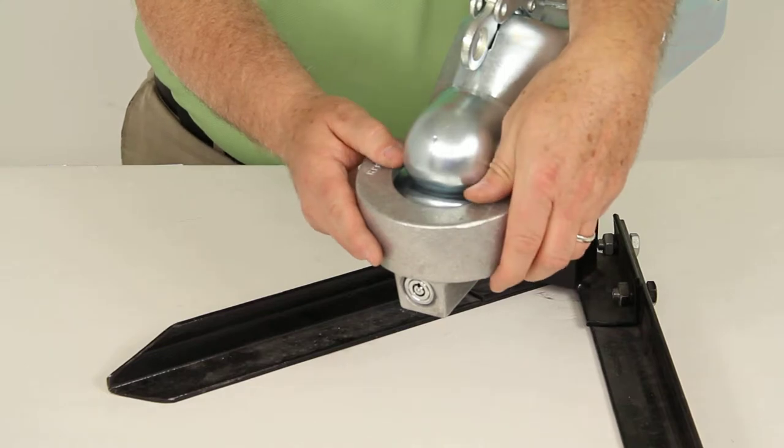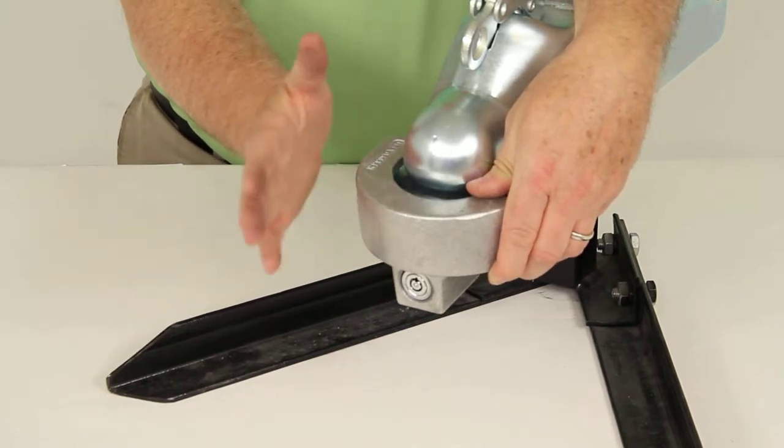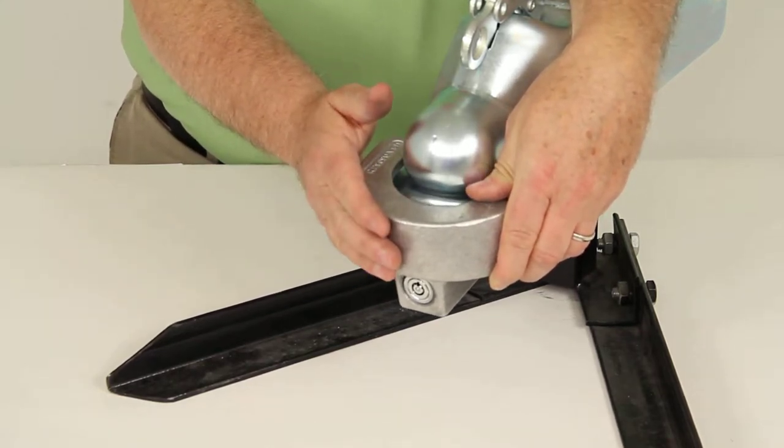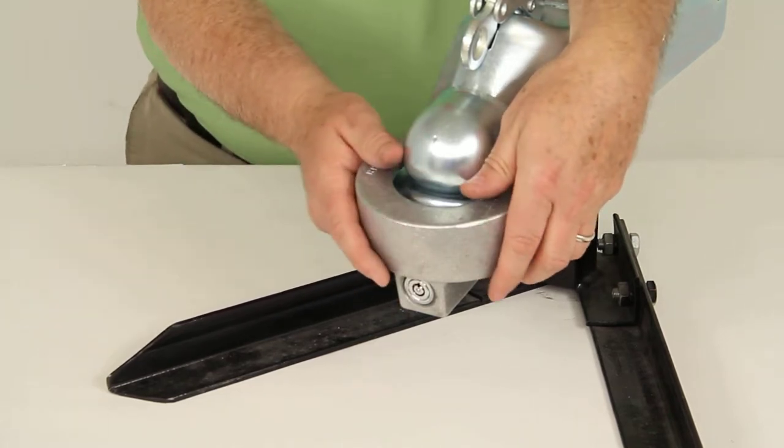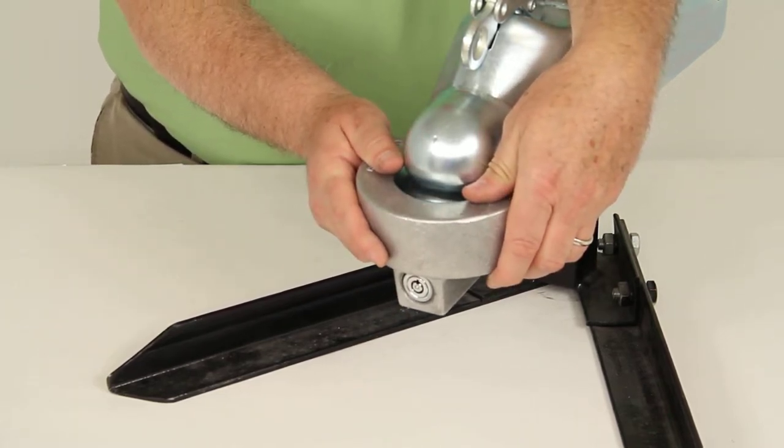When you go to order it, you just select the key-to-like and you can order multiples of the same lock keyed to like, or you can get it keyed the same as your other push button Blaylock locks you might own.